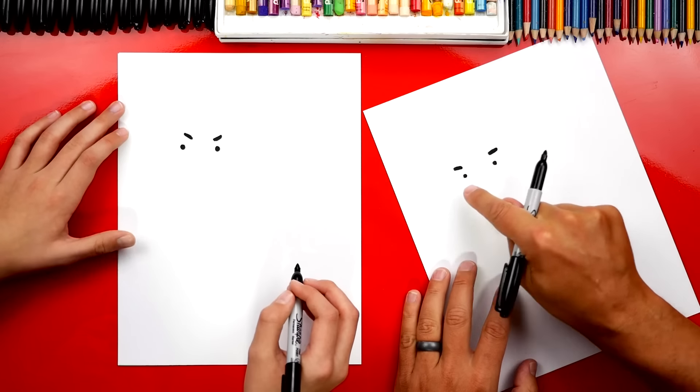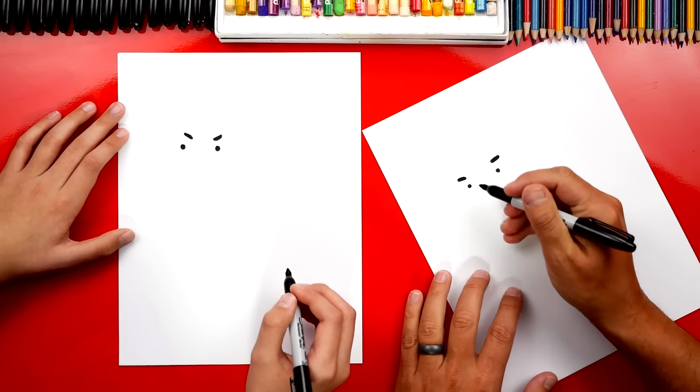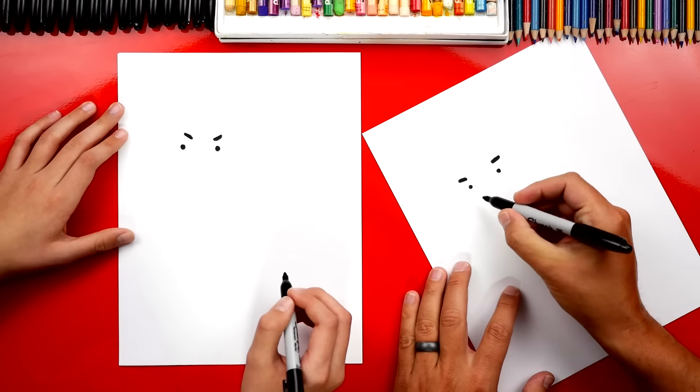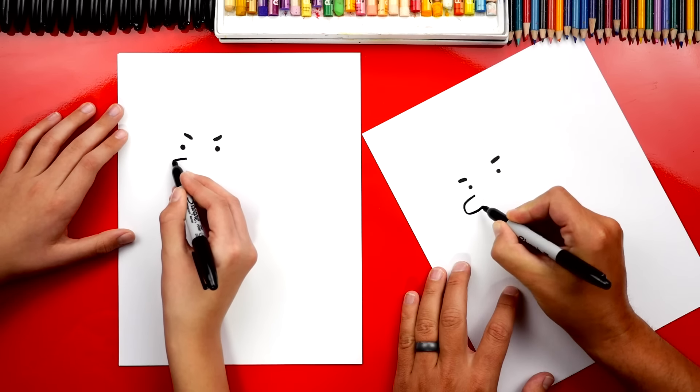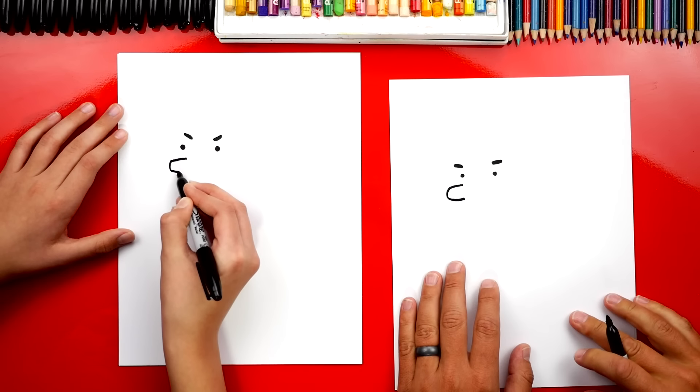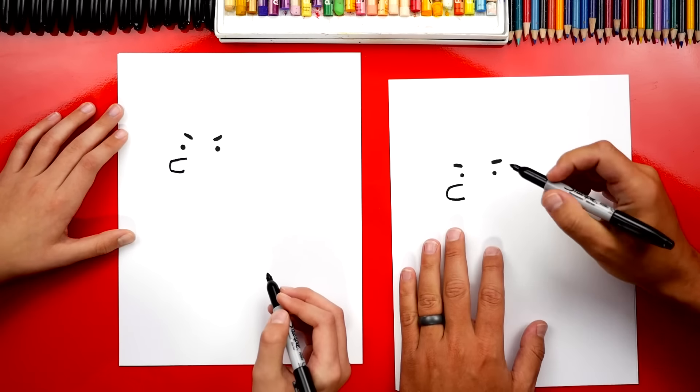Then we're going to draw his nose, and we're going to draw a sideways U right below the left eye. So we're going to start here and draw a sideways U that comes out like this and then back in. Yeah, good job. Big nose. Big nose.